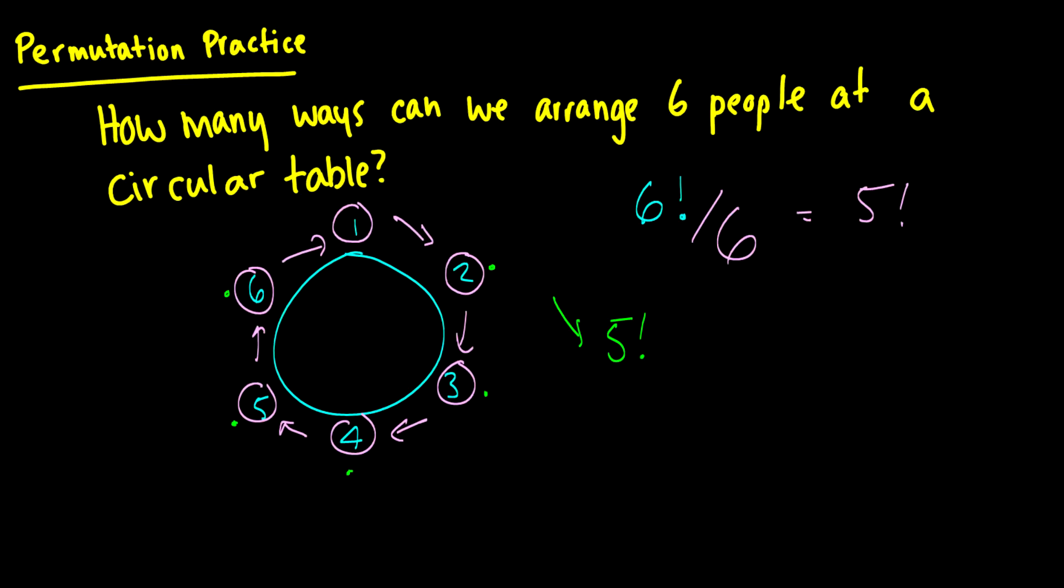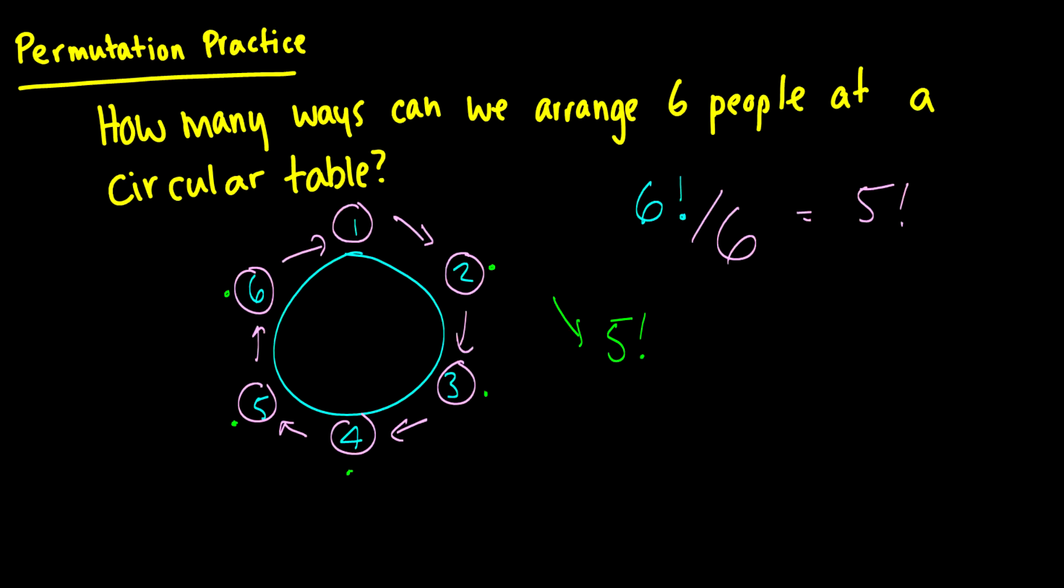So here's where the problem gets a little bit more interesting. Suppose we have those same six people except three of them are men and three of them are women and we want it so that the men and women alternate. So if we draw this picture here we have a man, a woman, a man, a woman, a man, and a woman.